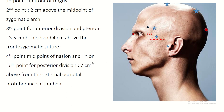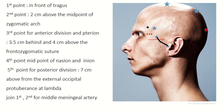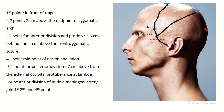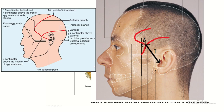Fifth point for the posterior division of the middle meningeal artery: seven centimeters above the external occipital protuberance at the lambda. Join the first and second points for the middle meningeal artery trunk. The third point marks the pterion. Join the first, second, third, and fourth points for the anterior division, and the first, second, and fourth points for the posterior division. This is the summary of the middle meningeal artery — anterior and posterior divisions.